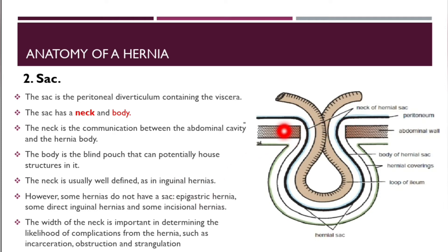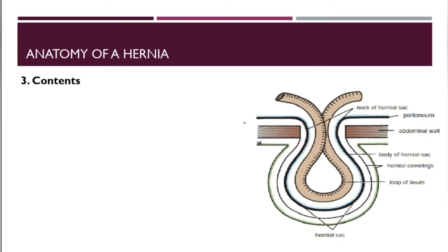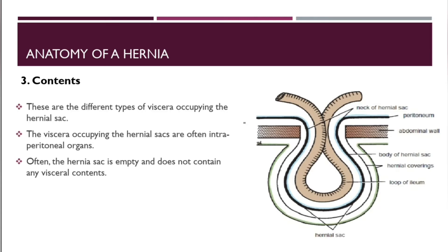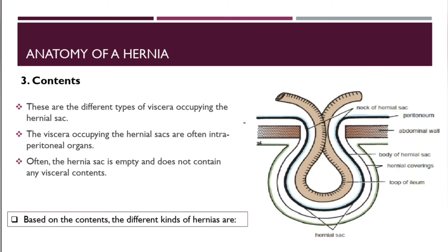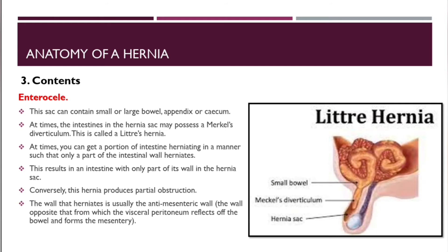The width of the neck is very important in determining the likelihood of complications such as incarceration, obstruction, and strangulation. The contents of the hernia are the viscera occupying the hernial sac, often intraperitoneal organs. The sac can also be empty. Based on contents, we can have different types — for example, an enterocele, which can contain small or large bowel, appendix, or cecum.